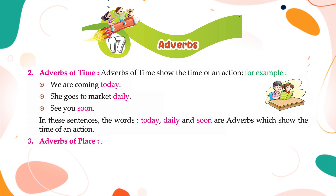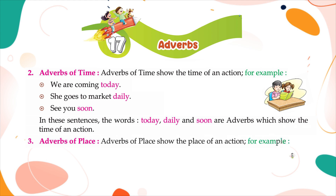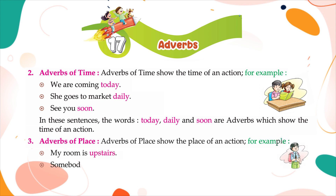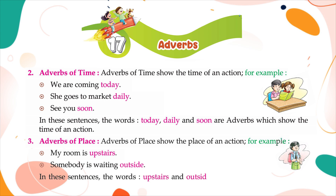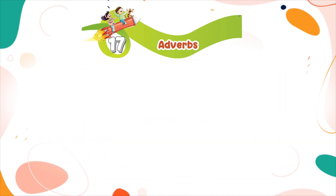Adverbs of place show the place of an action. For example: 'My room is upstairs.' 'Somebody is waiting outside.' In these sentences, the words 'upstairs' and 'outside' are adverbs which show the place of an action.